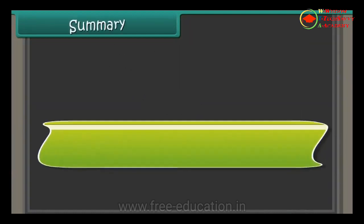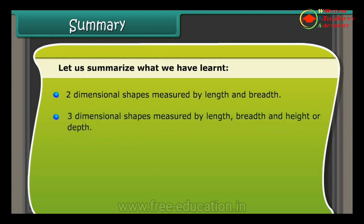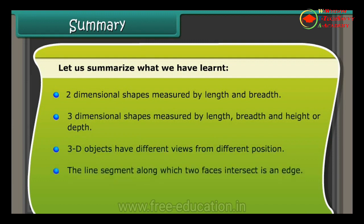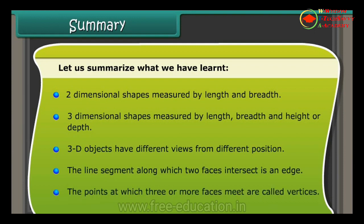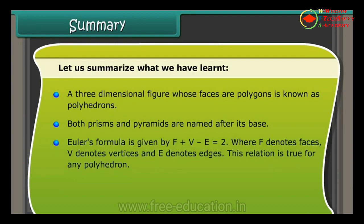Summary: two-dimensional shapes are measured by length and breadth; three-dimensional shapes are measured by length, breadth, and height or depth. 3D objects have different views from different positions. An edge is the line segment along which two faces intersect; vertices are points where three or more faces meet. A three-dimensional figure whose faces are polygons is a polyhedron. Both prisms and pyramids are named after their bases. Euler's formula is F + V − E = 2, where F denotes faces, V denotes vertices, and E denotes edges. This relation is true for any polyhedron.